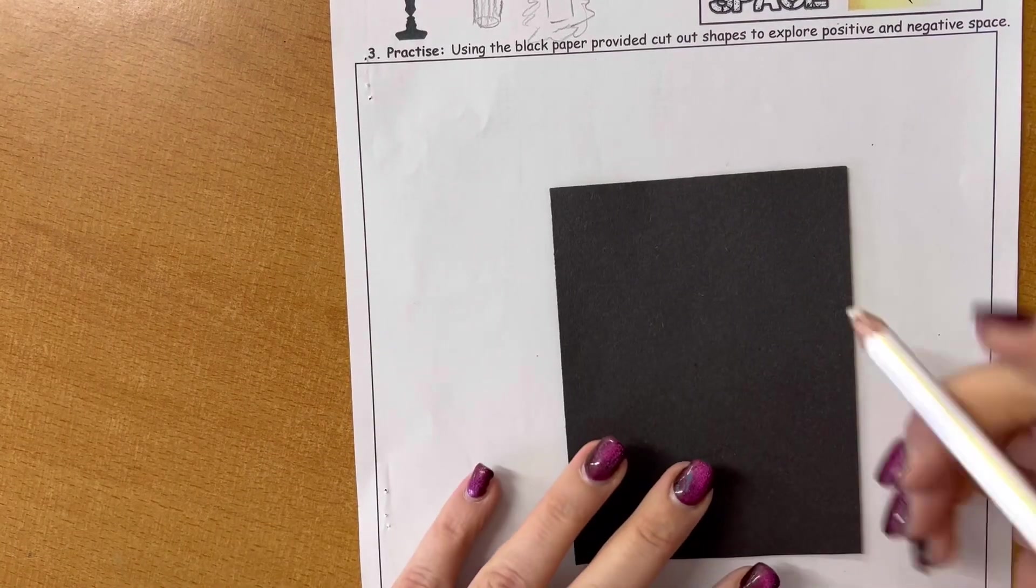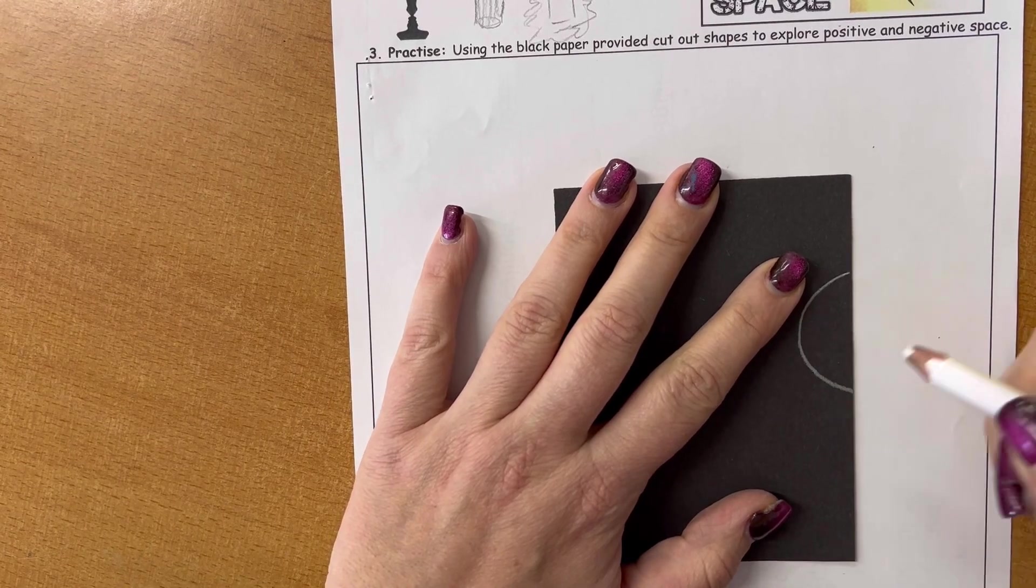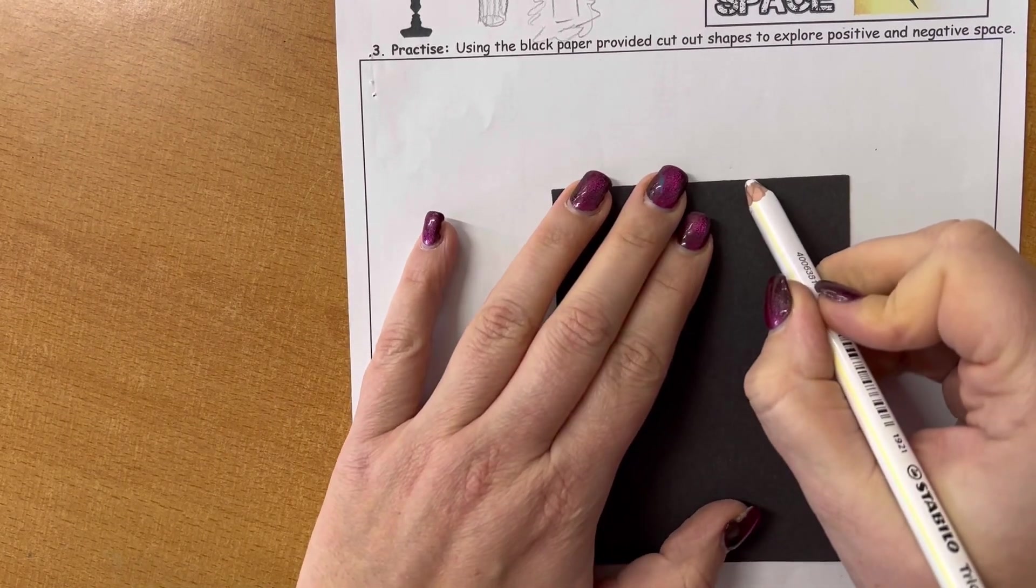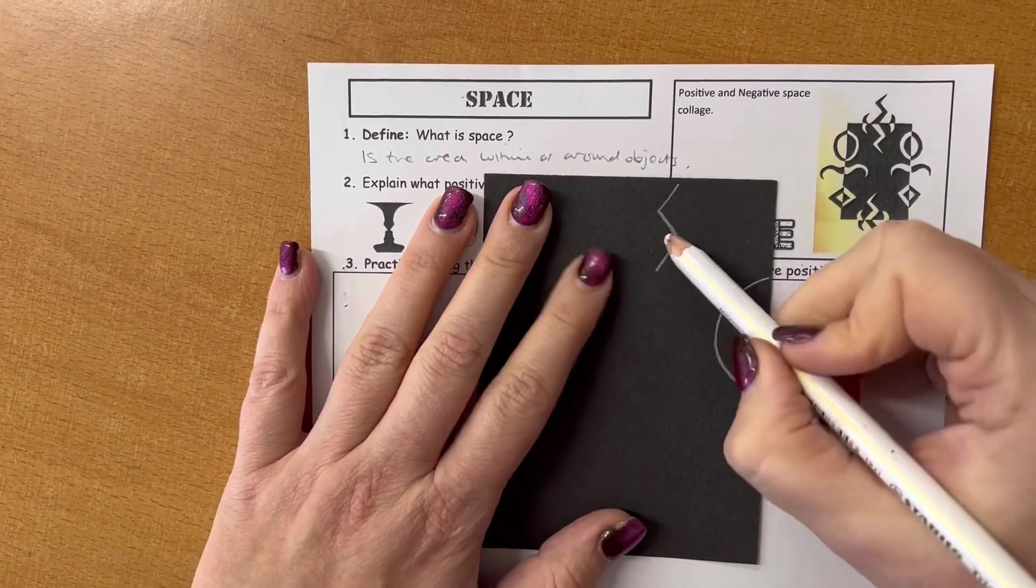So on this paper, you are going to draw some shapes coming out of the edge. So there's an example at the top of the sheet here that you can look at.